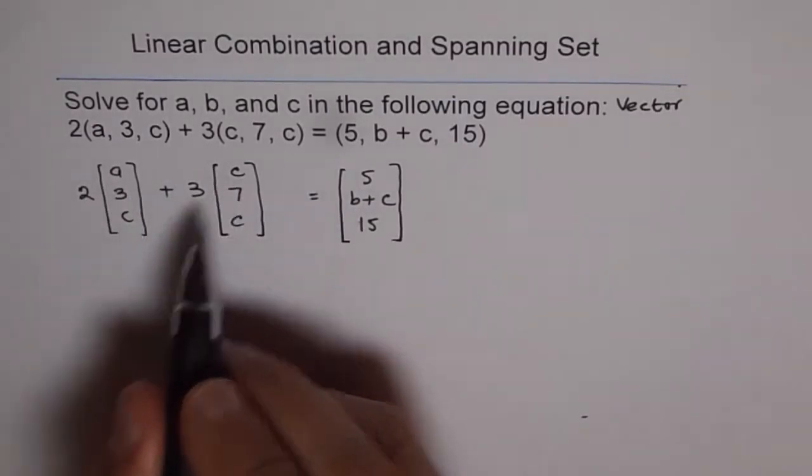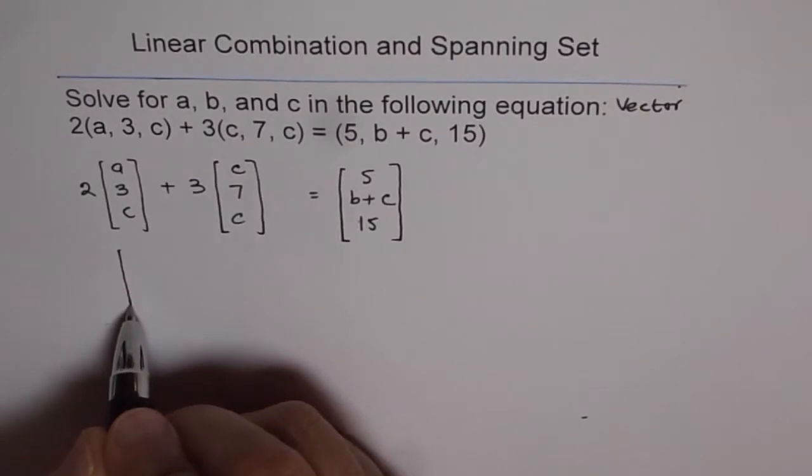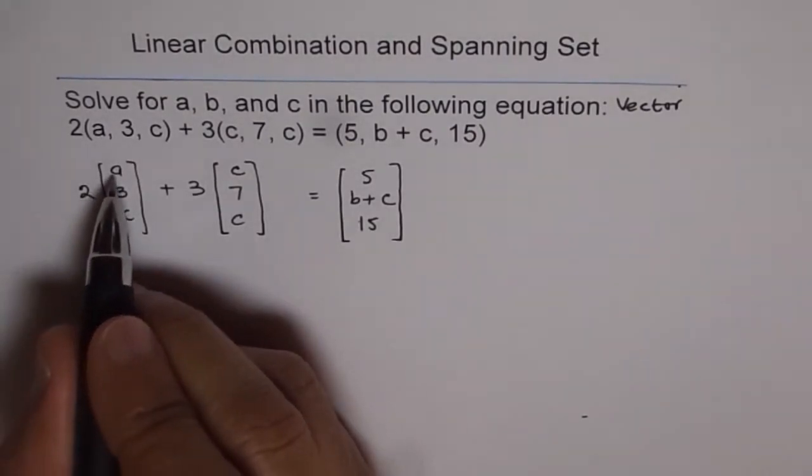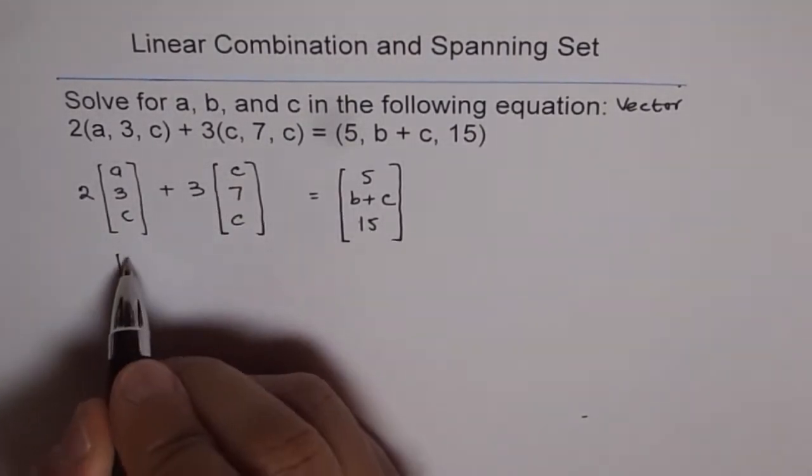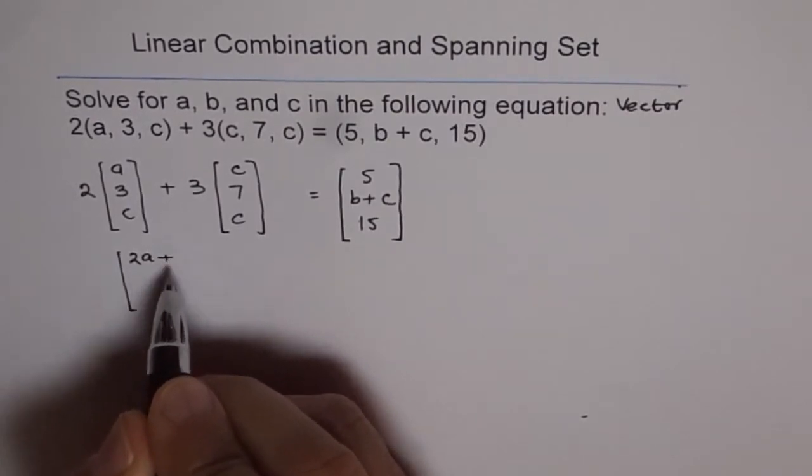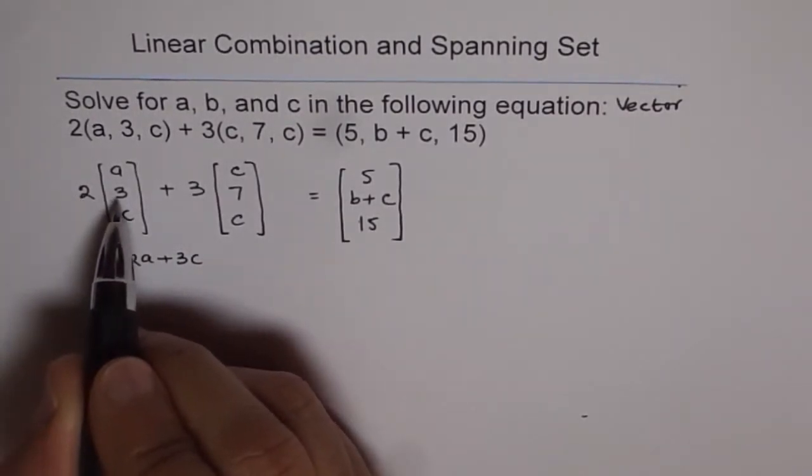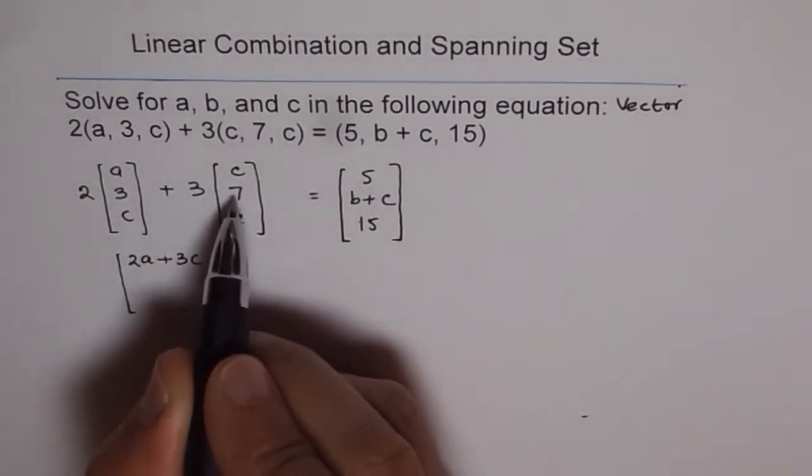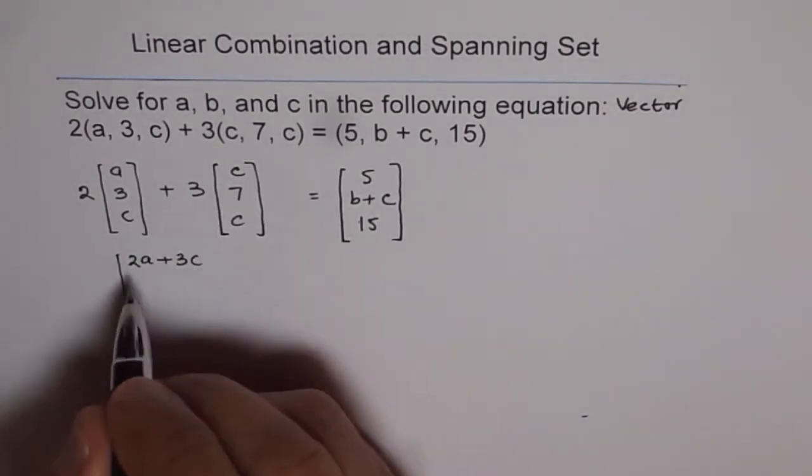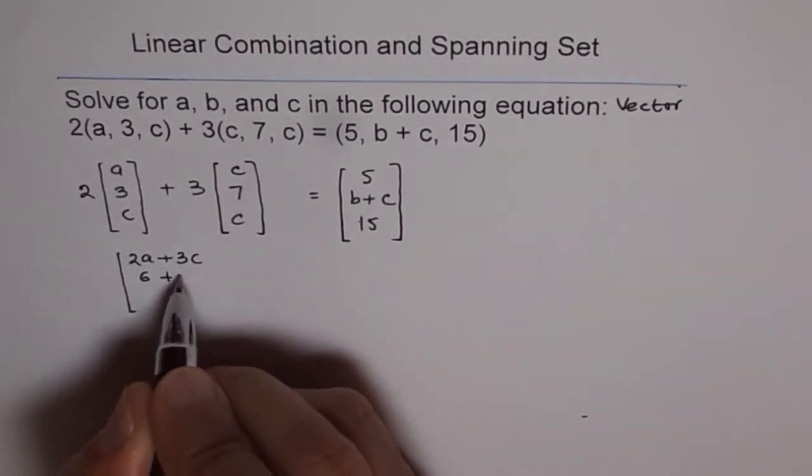When we add, what do we get? We get from here 2a plus 3c. Then, 2 times 3 is 6 and 3 times 7 is 21. So, I will write here 6 plus 21.